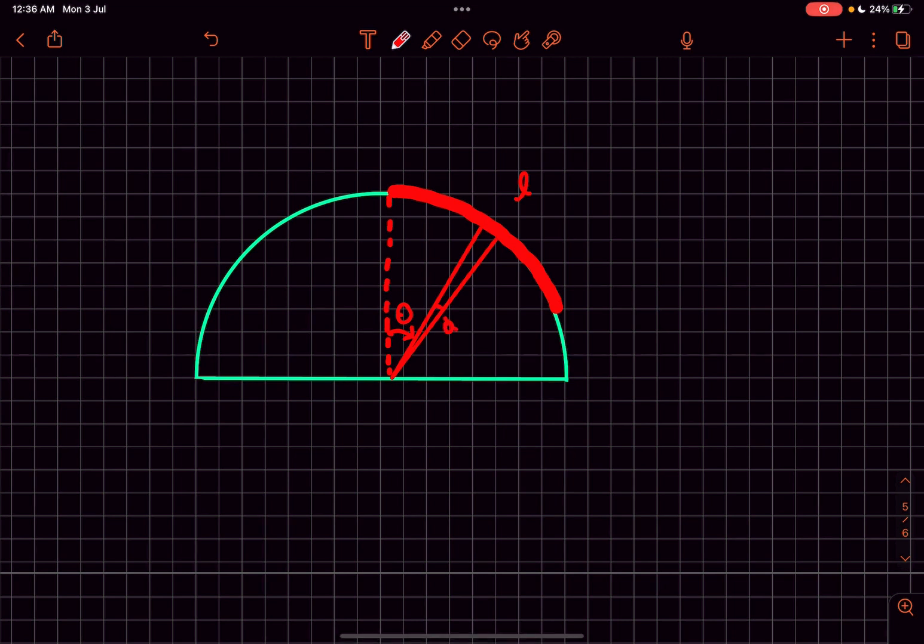whose angular width is d theta. There will be a dm·g acting vertically downwards. The component of the weight along the tangent is dm·g sin(theta). The tension acting here is T, and the tension acting here is T plus dT.